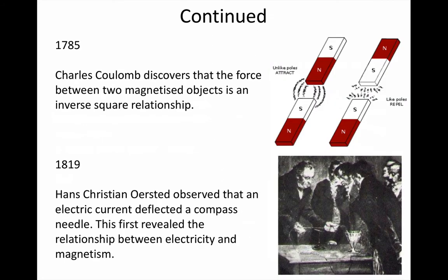Charles Coulomb did the first quantitative measurements of magnetic field strength. He discovered that the force between any two magnetized objects is proportional to the product of their individual fields and inversely proportional to the square of the distance between them.